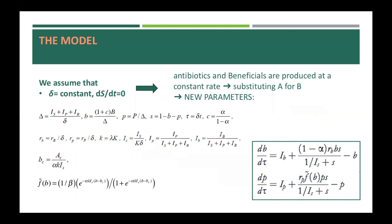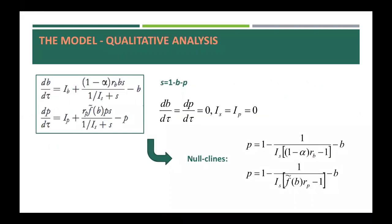Suppose we assume that the mortality rate is the same for all four equations and that the total amount of substrate has reached the steady state. In that case, antibiotics and beneficials are produced at a constant rate, allowing us to substitute A for B. This way we can introduce new parameters, simplifying the system into two dimensions. For simplicity, we also assume that the immigration rates are zero. And under conservation of mass, S equals one minus B. By investigating the nullclines, we can perform the qualitative analysis of the system. We can examine these nullclines as a function of the host resource level, with the proportion of host resources devoted to antibiotic production by beneficials and the bacterial growth rate.